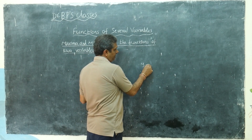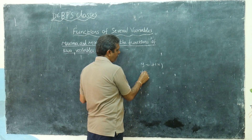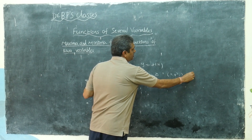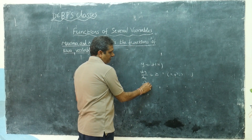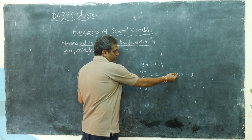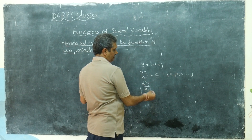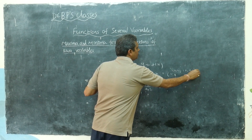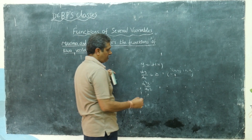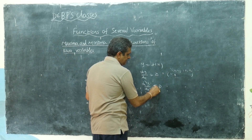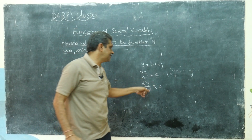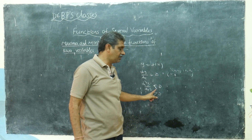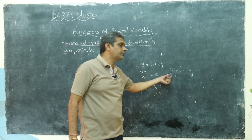In single-variable max/minima, given y = f(x), you first find dy/dx, equate it to zero, and get a bunch of points x1, x2, x3, and so on. Then you find d²y/dx² and substitute each point. If d²y/dx² is less than zero, the function attains a maximum; if greater than zero, it attains a minimum at that point.